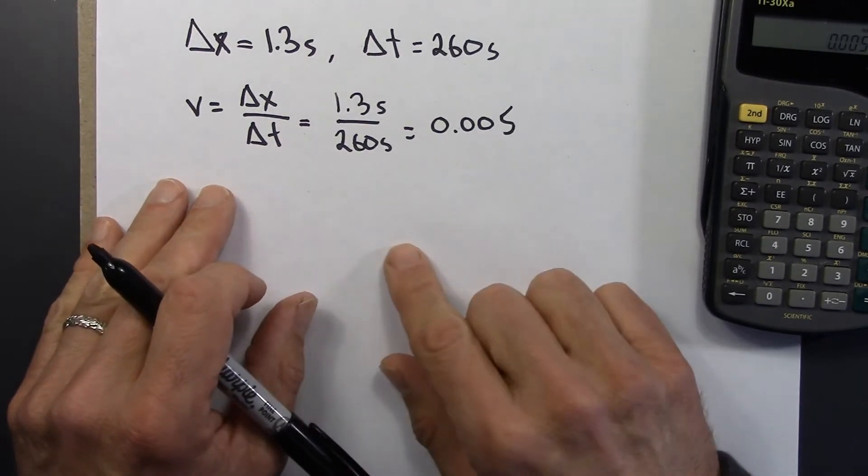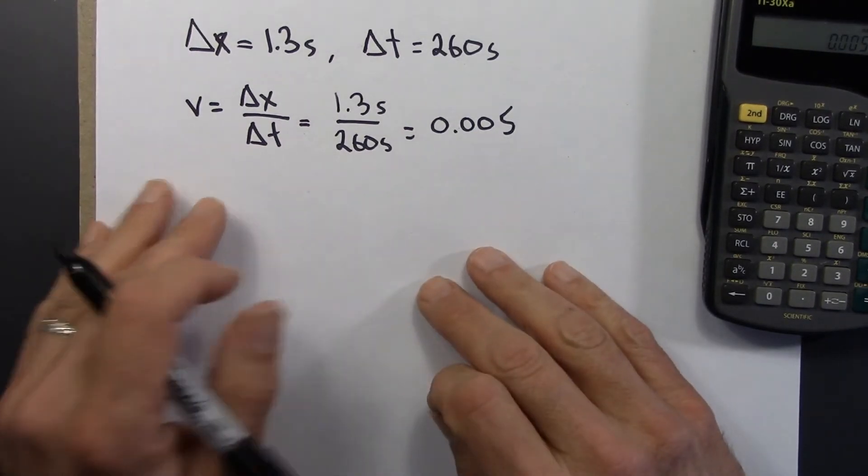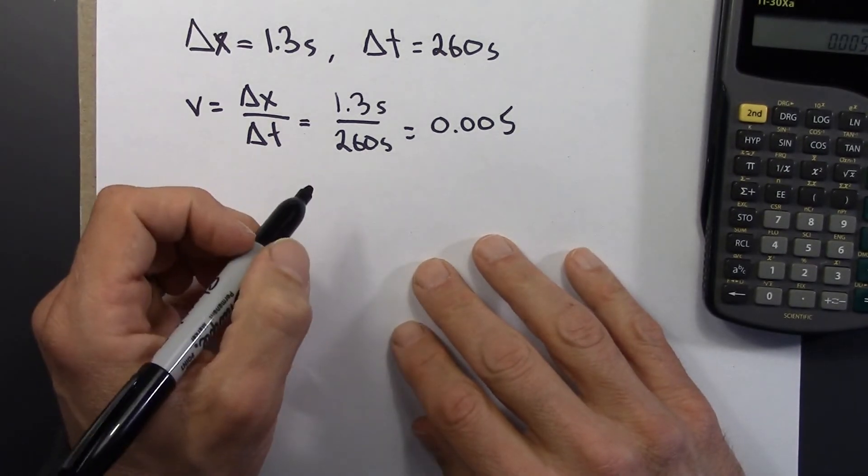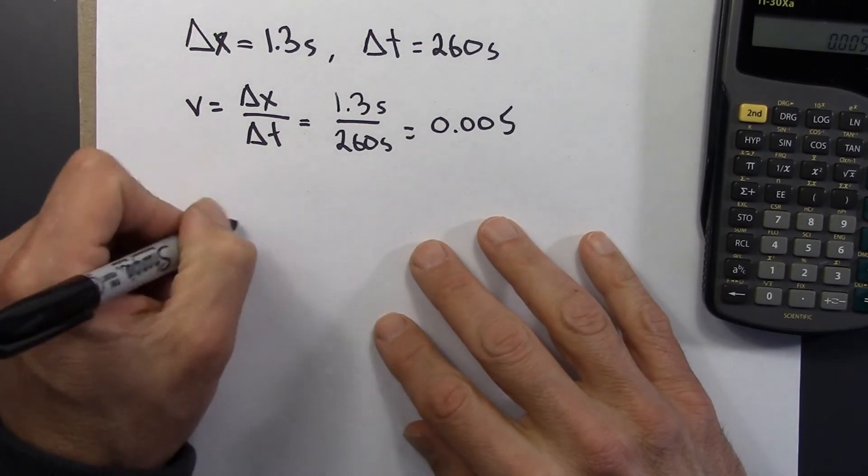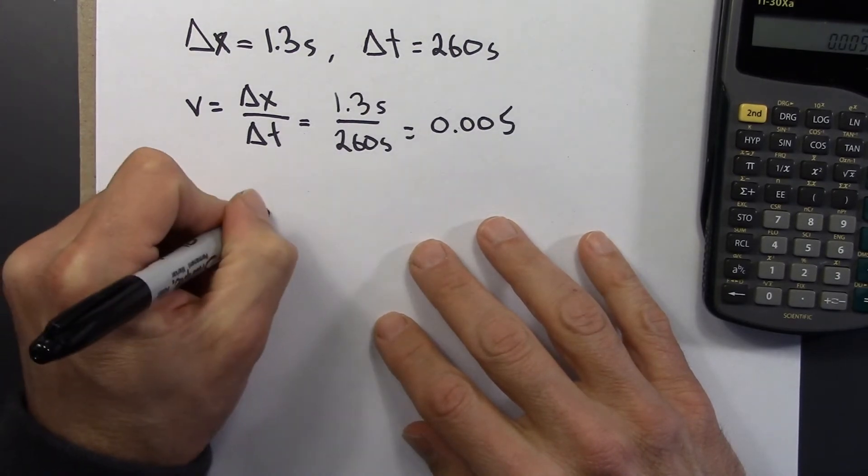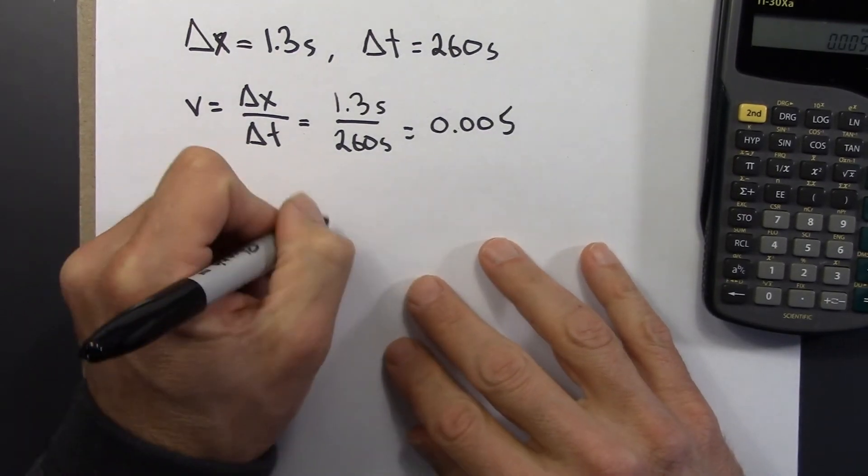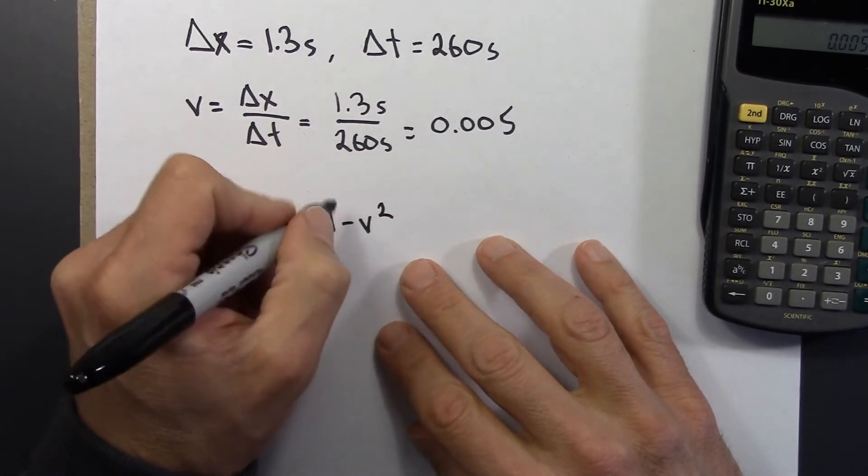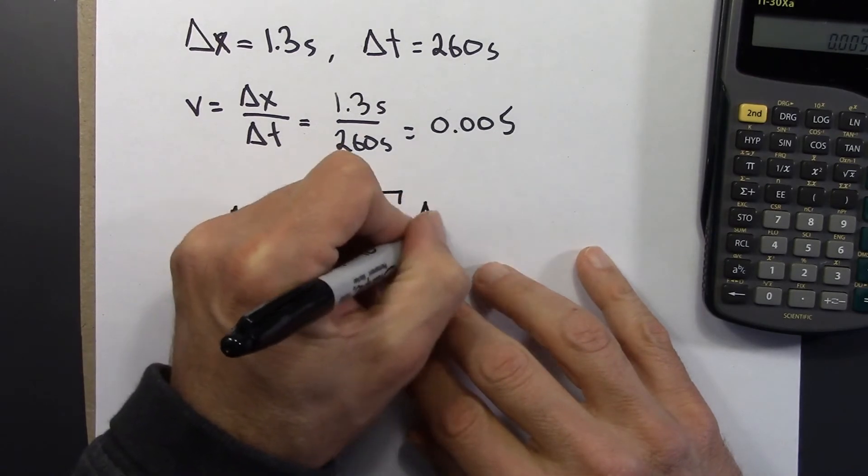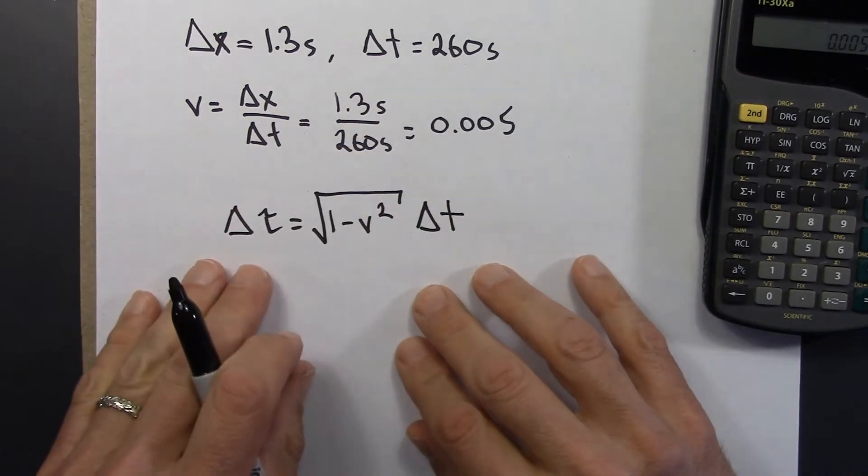But in the event, let's use the proper time formula to figure out the time interval from the train's point of view. So we've got delta tau, 1 minus v squared, square root, delta t.